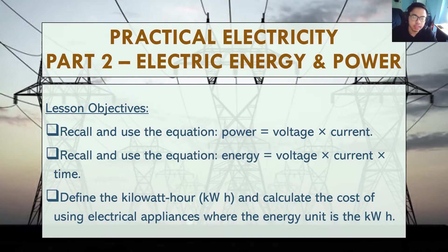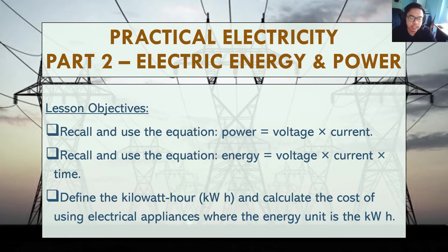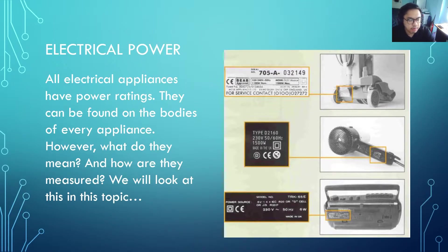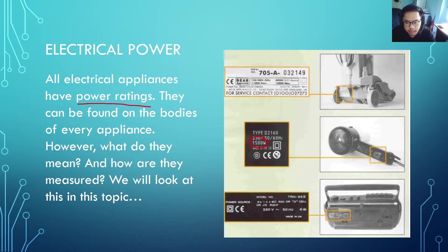Welcome back everyone to another lesson in physics. In this part two of practical electricity, we're going to look at electric energy and electric power — how to calculate these things, what they are, and also a unit called the kilowatt hour. All electrical appliances have power ratings and they can be found on the bodies of every appliance, like this power rating for this hairdryer and this radio. We'll look at what they mean and how they are measured in this topic.